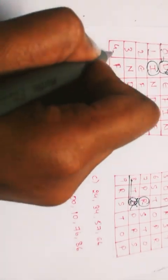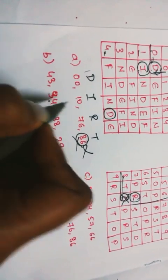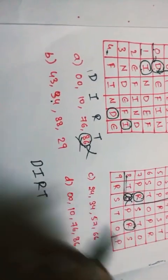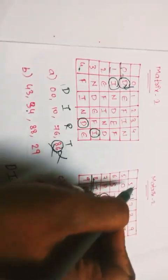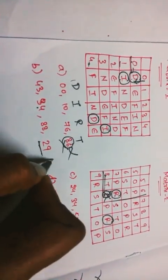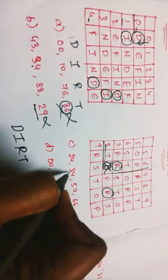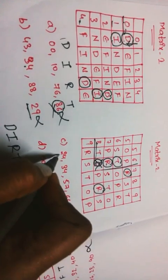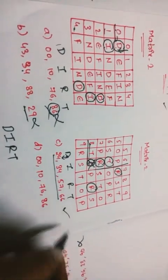Checking option B: 4,3 — D is satisfied. 3,4 — I is satisfied. 8,8 — R is satisfied. Next checking for F: 2,4 — D is satisfied. Then 3,4 — I is satisfied. 5,7 — R is satisfied. 6,6 — T is satisfied. Each and every letter D, I, R, T is satisfied by each and every number in option B. So this option is correct.